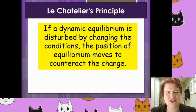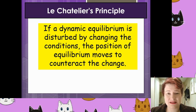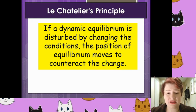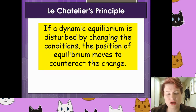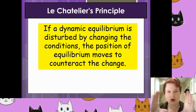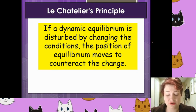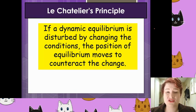Le Chatelier's principle states: if the dynamic equilibrium is disturbed by changing the conditions, the position of the equilibrium moves to counteract that change. A simpler way of saying it: whatever you do to the chemicals — the system — it will do the opposite, to try to get back to that equilibrium position. Industrial chemists want to deliberately manipulate those conditions to get a specific product, shifting the equilibrium all the way to the right-hand side towards the products.